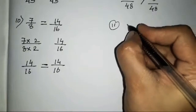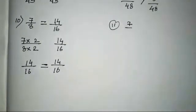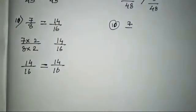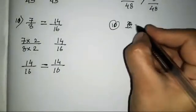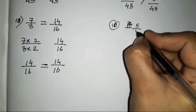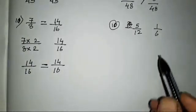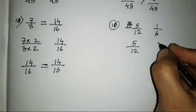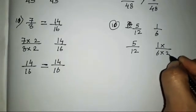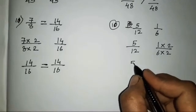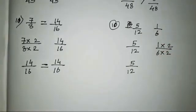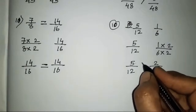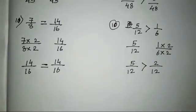Sorry children, by mistake I wrote the 11th sum first. Now doing the correct 10th sum: 5 upon 12 and 1 upon 6. In the 6 times table, 12 comes by multiplying with 2. Keep 5/12 as it is and multiply 1/6 by 2: 1 two is 2 and 6 twos are 12. Now 5 is greater than 2, so 5/12 is greater.